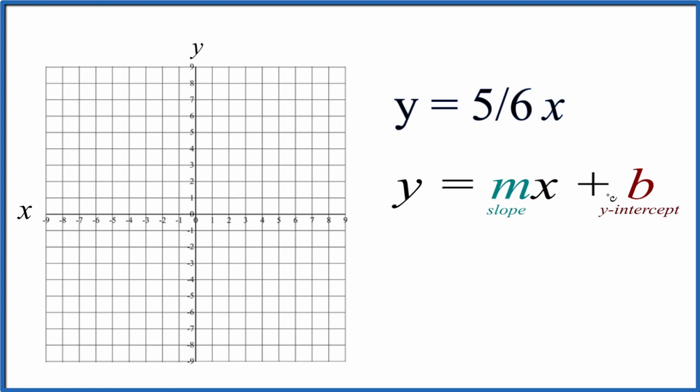When we look at slope-intercept formula, we have y equals mx plus b. b is the y-intercept, but we don't have a b up here. We can just call this zero.